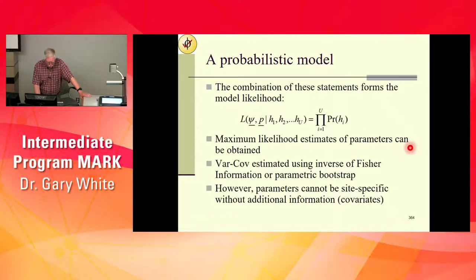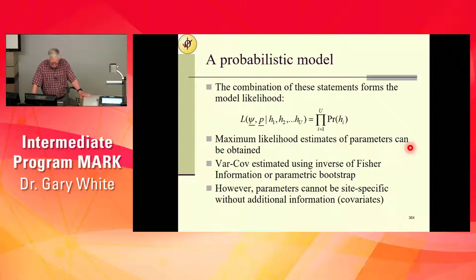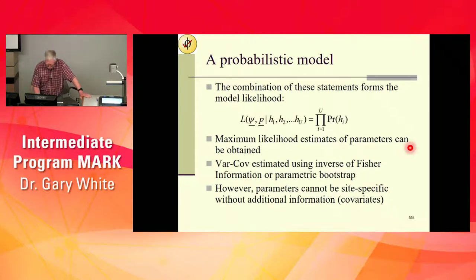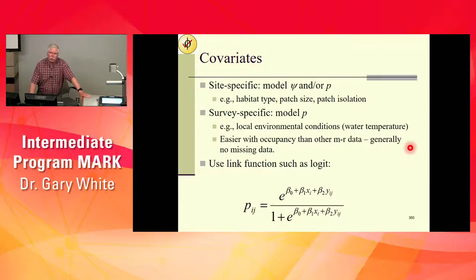We compute those cell probabilities, put them into a likelihood, and take that likelihood across all the sites. We get the variance-covariance matrix from Fisher's information matrix. However, parameters cannot be site-specific without additional information or covariates. You've got to have covariates involved. We bring in the logit function — that's what we use for P. But we can also have logit functions that predict psi for each site.